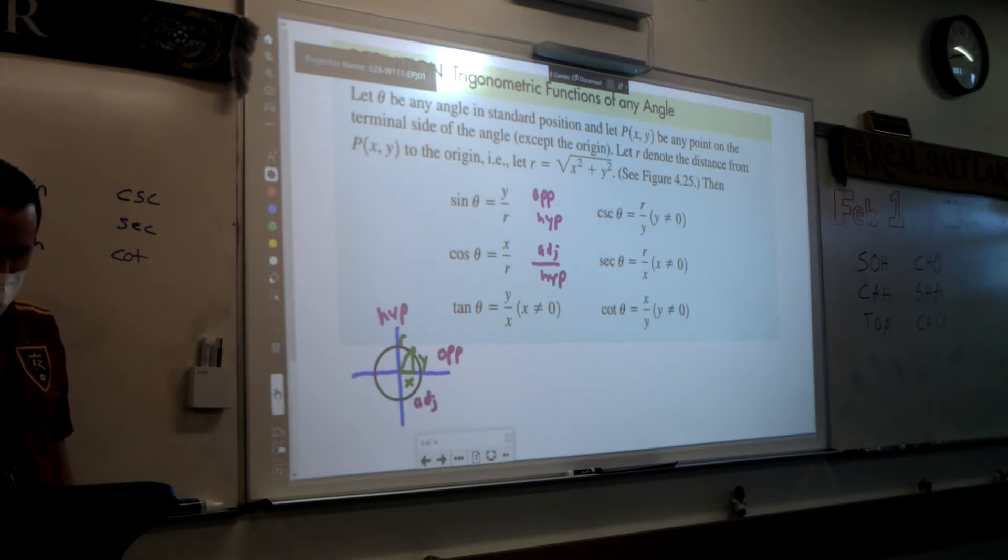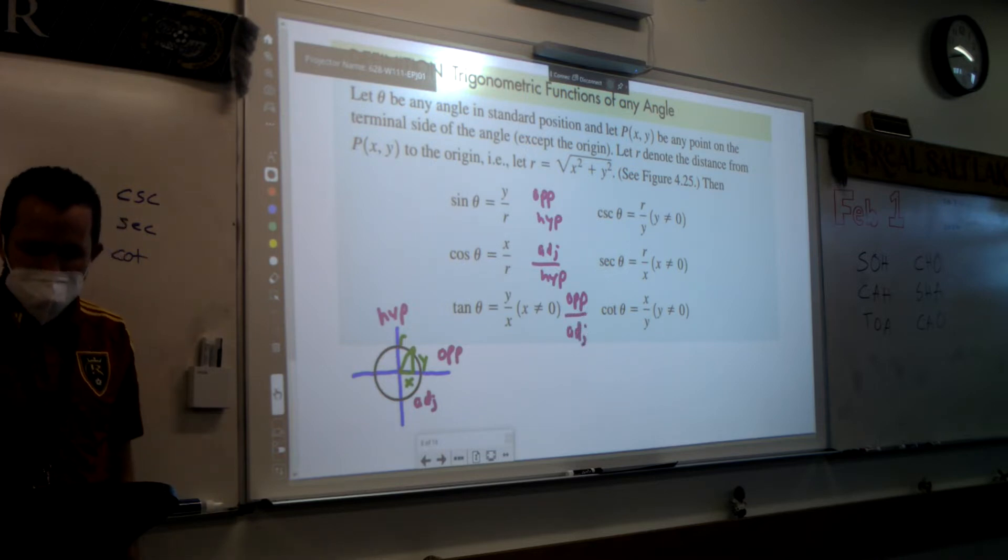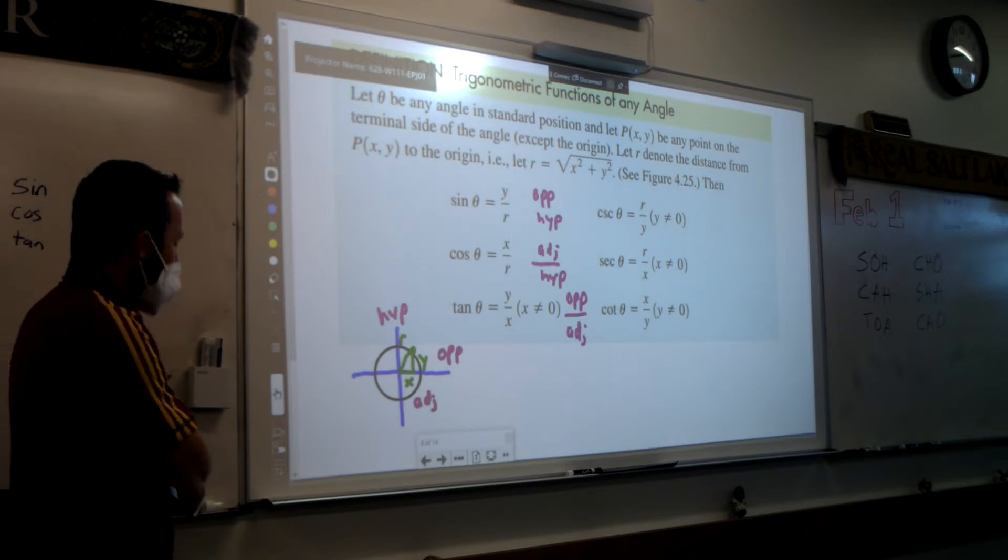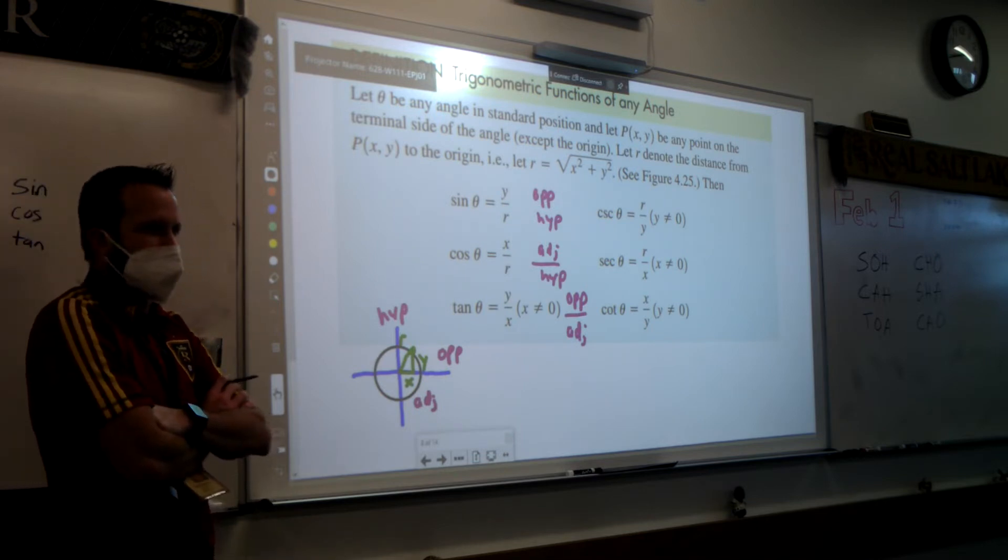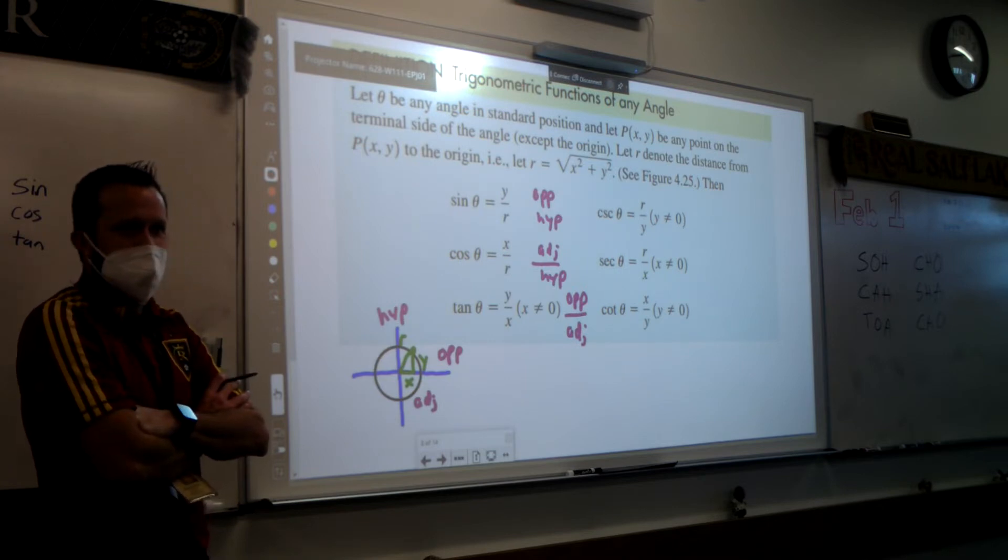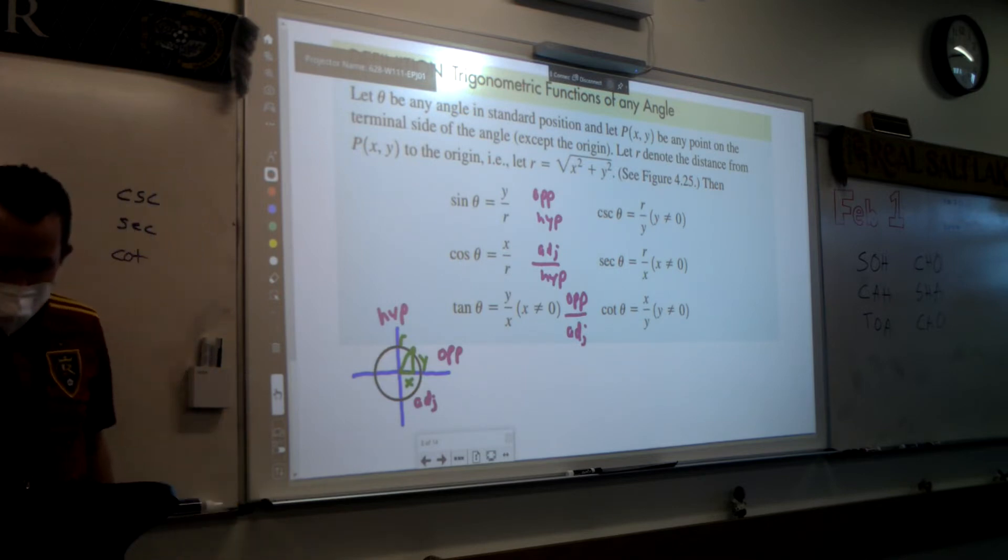And then last but not least, we're going to have that the tangent is opposite over adjacent. But opposite is y, adjacent is x. Keeping in mind that you can't let your denominator be zero. We can't divide by zero. Or what? What do we get if it's dividing by zero? A big mess. A big mess. Undefined. Okay, we don't like that.